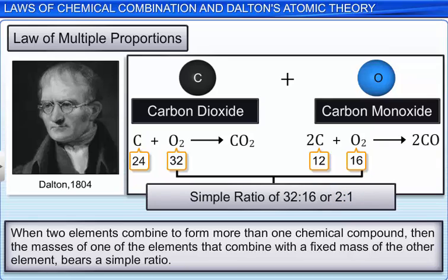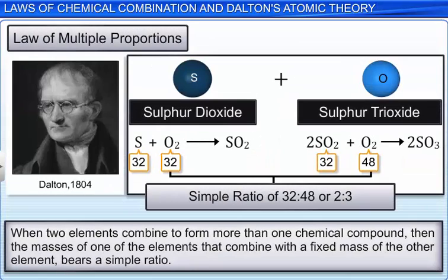In these reactions, a fixed amount of carbon is combining with multiple proportions of oxygen to form carbon dioxide and carbon monoxide. Similarly, when sulfur dioxide and sulfur trioxide are formed, the masses of oxygen bear a simple ratio of 32 is to 48 or 2 is to 3. A fixed amount of sulfur is combining with multiple proportions of oxygen.